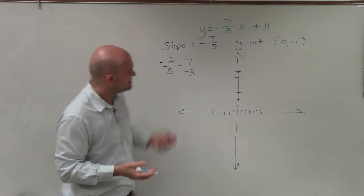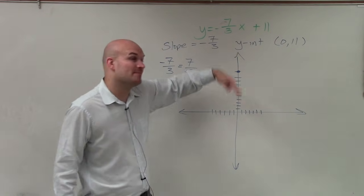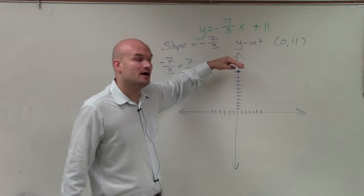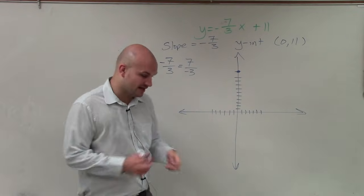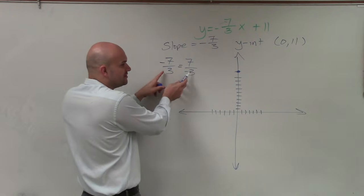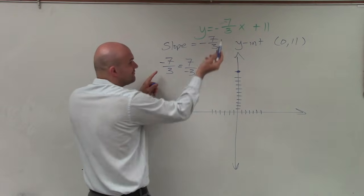It doesn't really matter either way. Since my graph is already so tall, I'm going to want to use the rate of change where my change in y is going down negative. So I'm going to use this as my slope. Even though this is fine, you can go up 7 to the left 3.